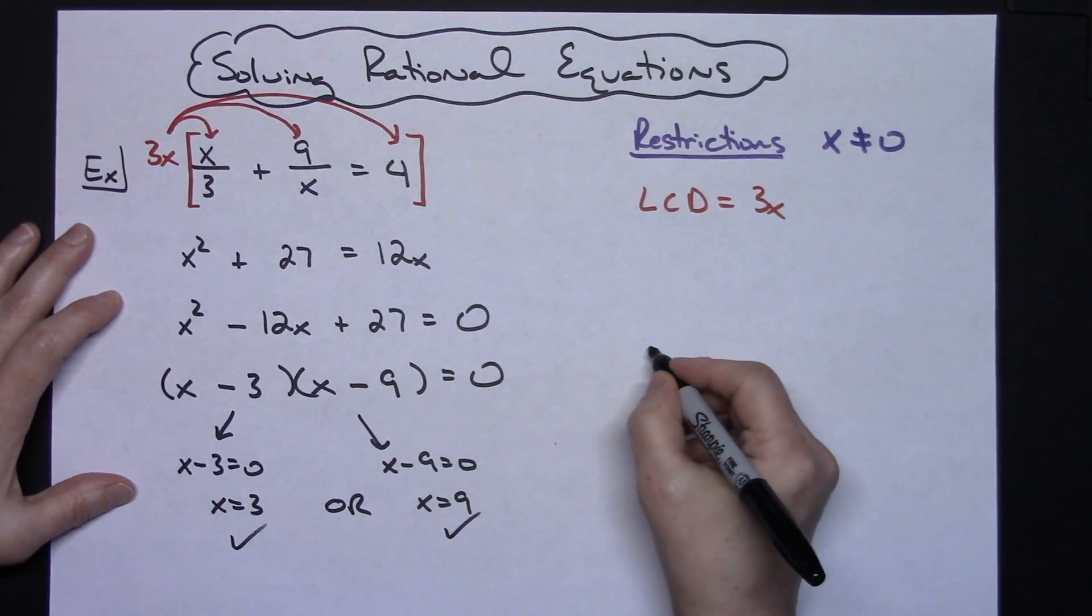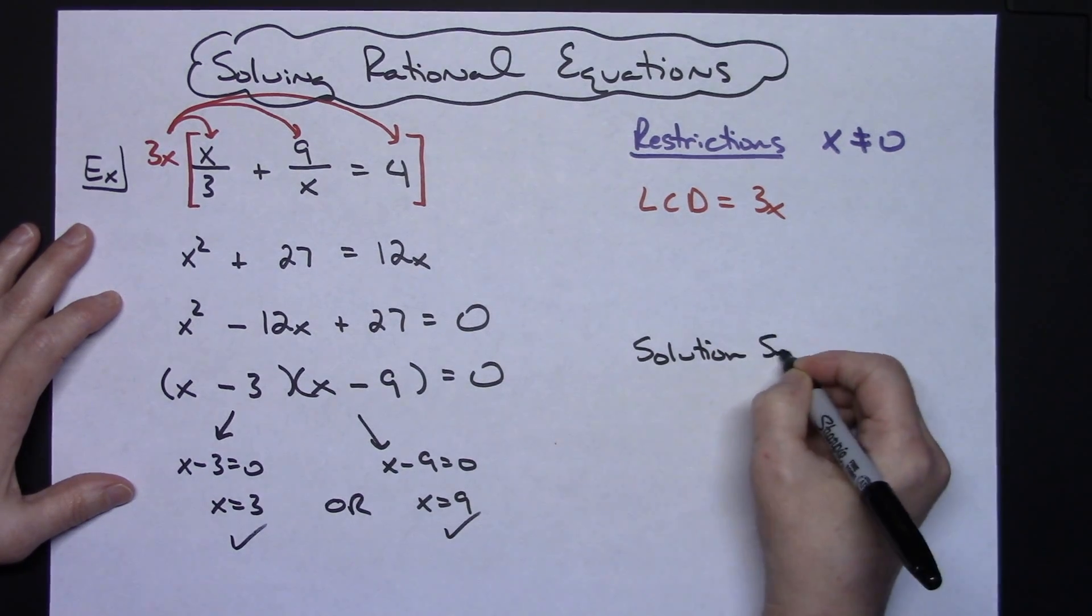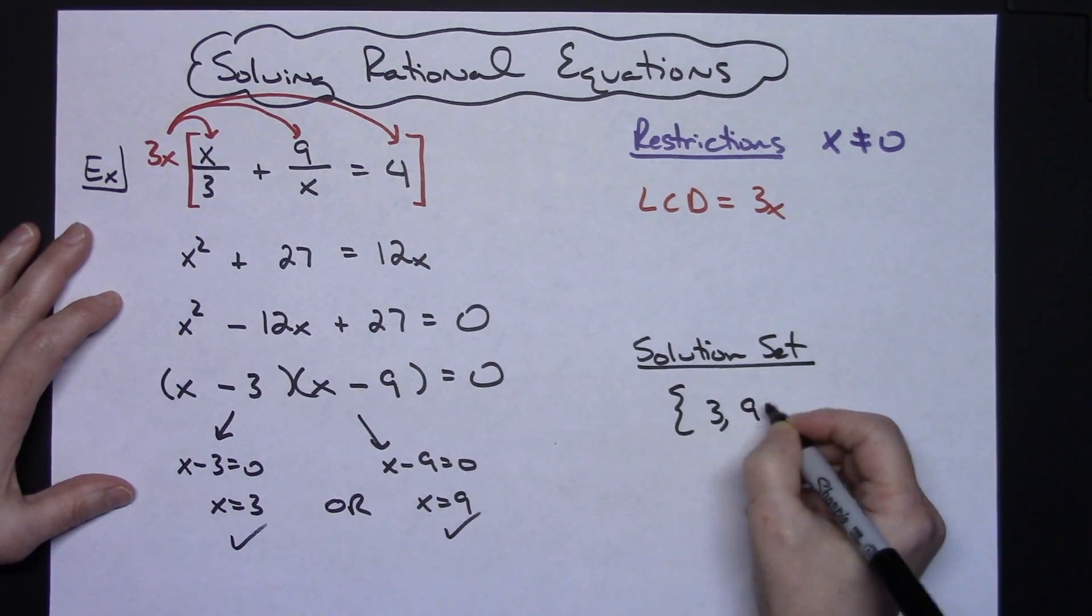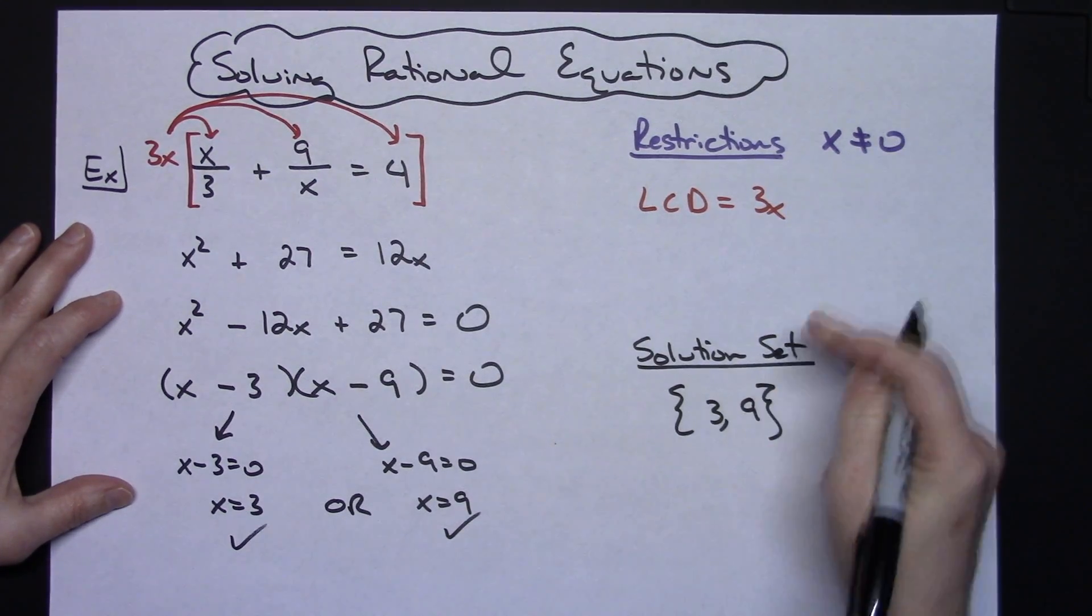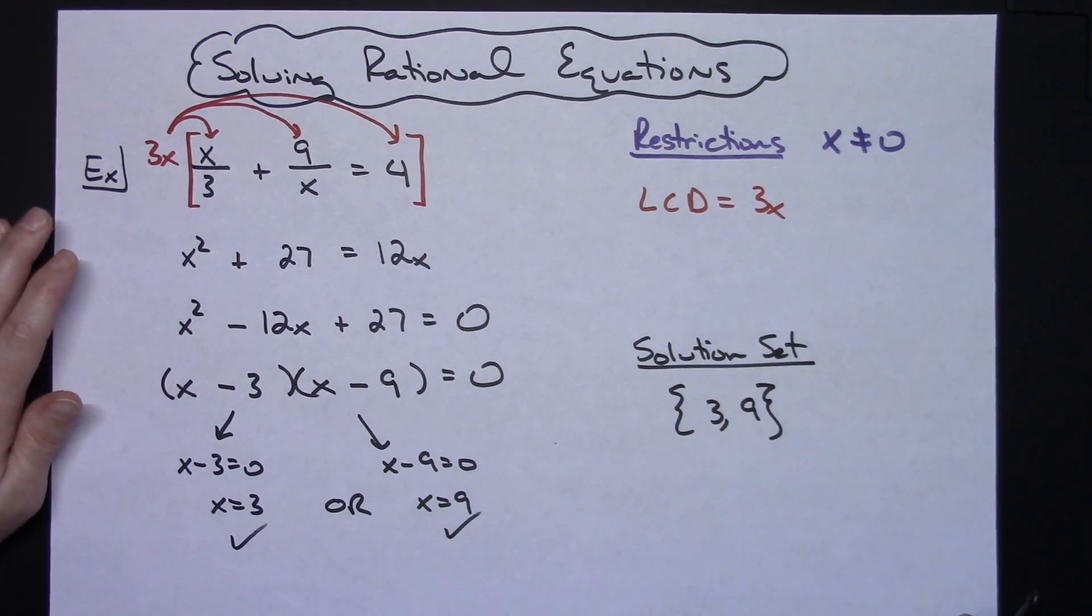And I'm going to write my solution in a solution set. That would be using set notation. Then I would have a three and a nine. And you can clearly see I did not break any of my restrictions here. And this one has two answers.